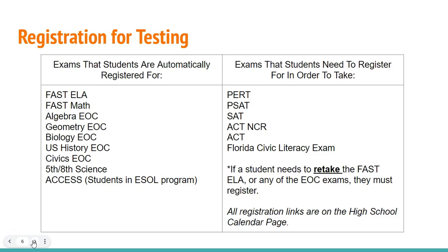On the left side of your screen you have all the exams that you are automatically registered for when you are in that class. However, if you need to retake the Algebra, Geometry, Biology, or US History exam because you missed it or because you did not pass it and need the passing score for graduation, then you will need to sign up to retake the exam.